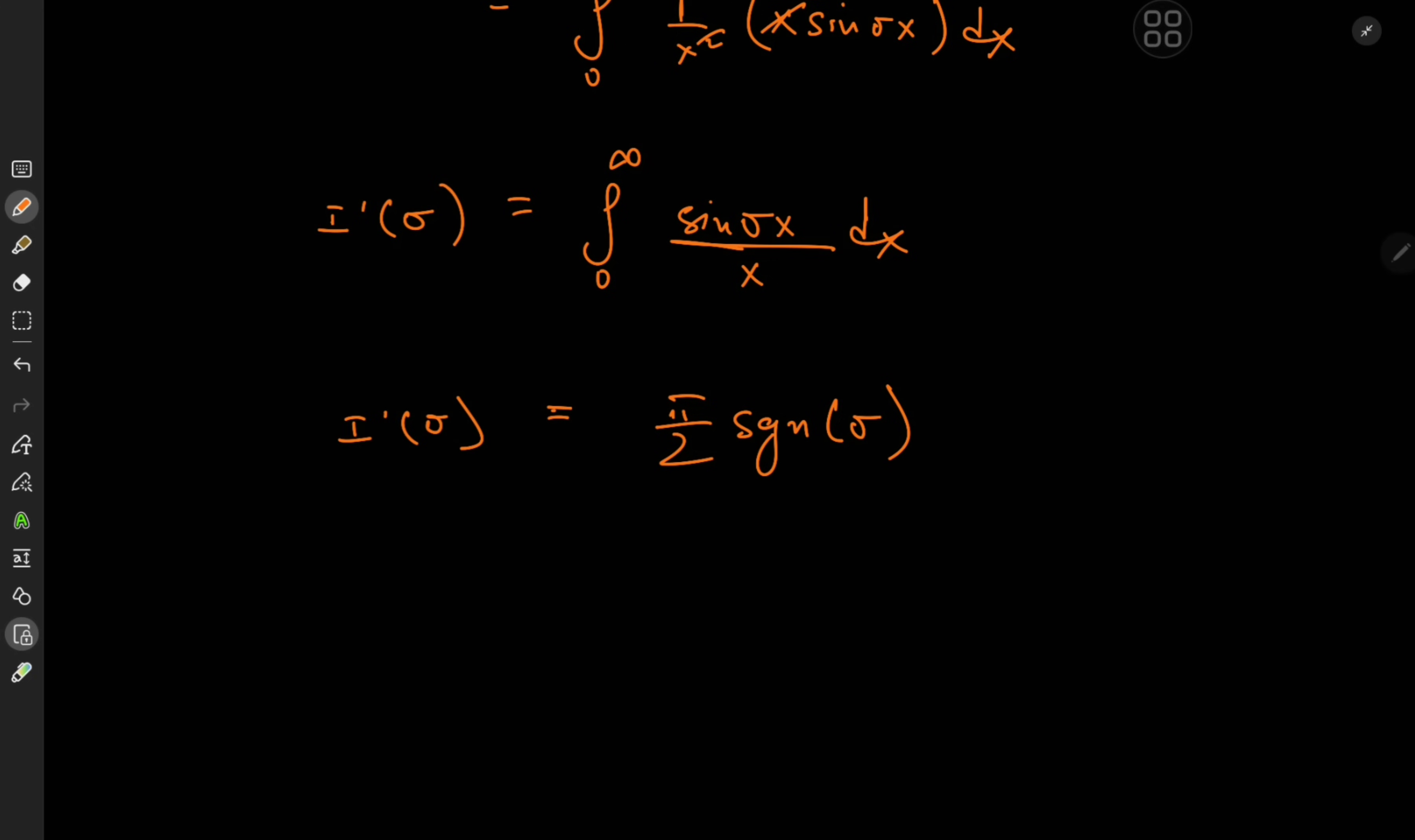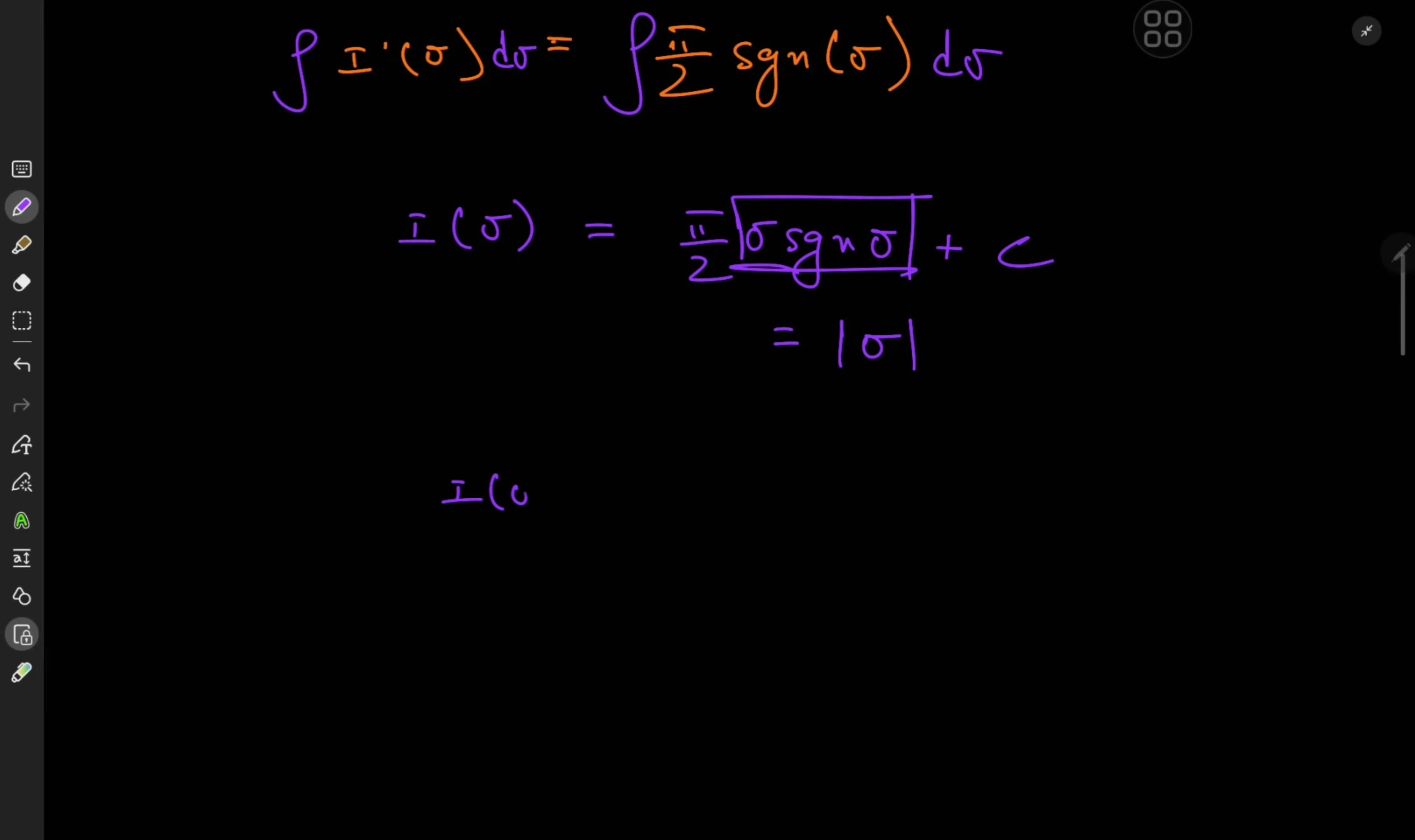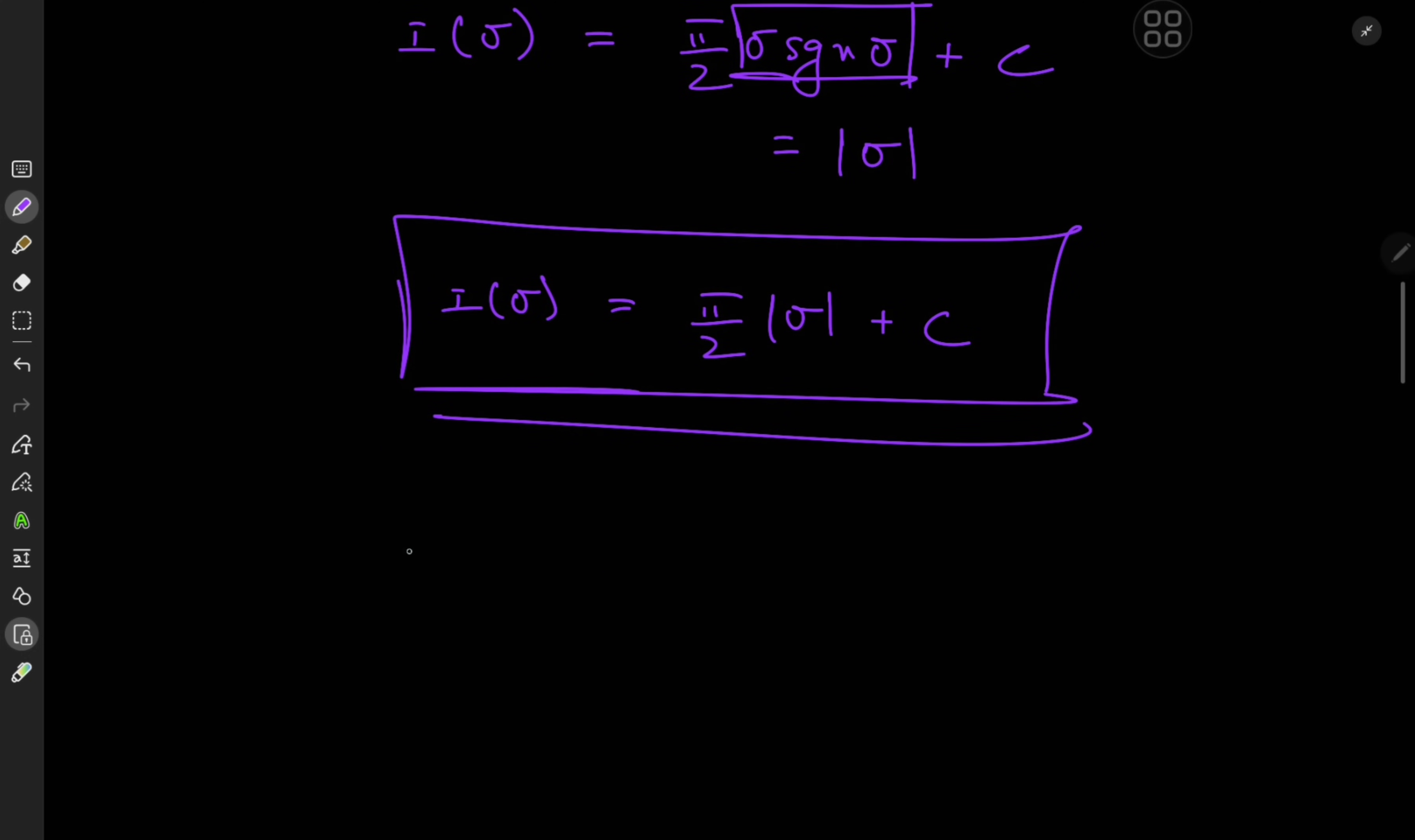So that's the derivative and now we attempt to recover back the integral function by integrating with respect to sigma. So we have i of sigma equal to pi over 2 sigma sign sigma plus a constant c that we now have to determine and this is actually pretty straightforward.